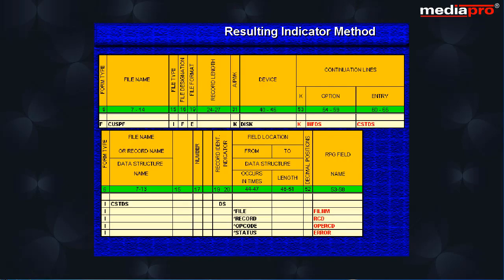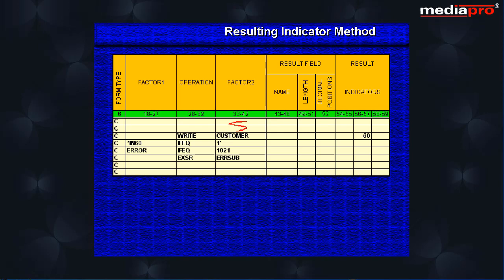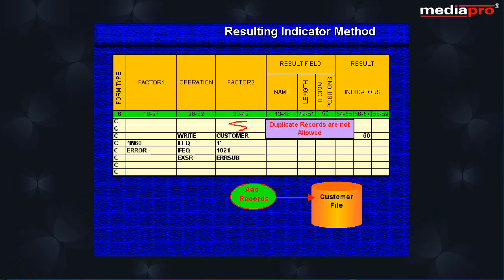Let us look at an example. Here we have a file information data structure with the error field that is associated with *STATUS and will contain an error code whenever an error occurs. This program adds new records entered by the user into a customer file. Duplicate records are not allowed in the customer file. The program uses the write operation to add a record to the database file.